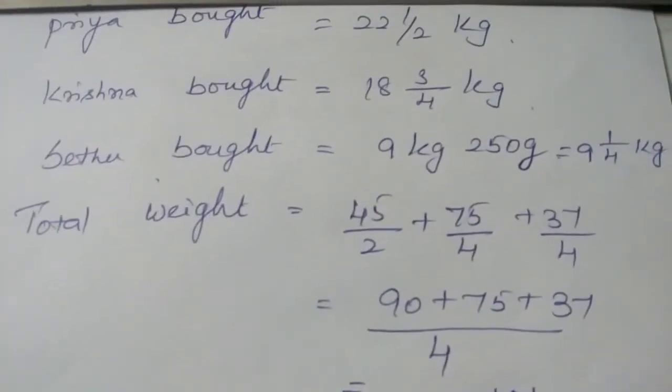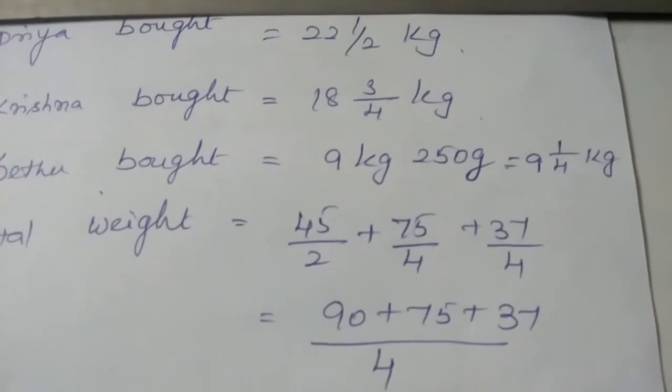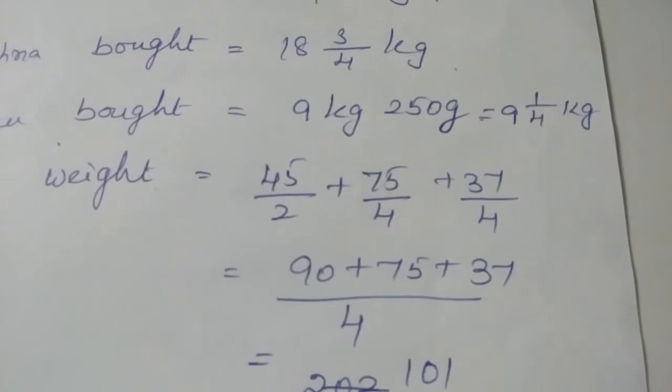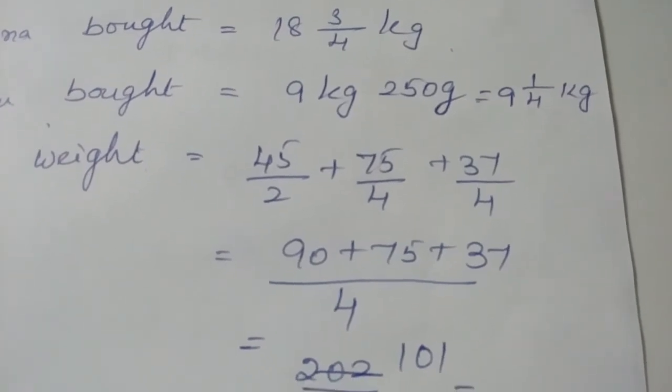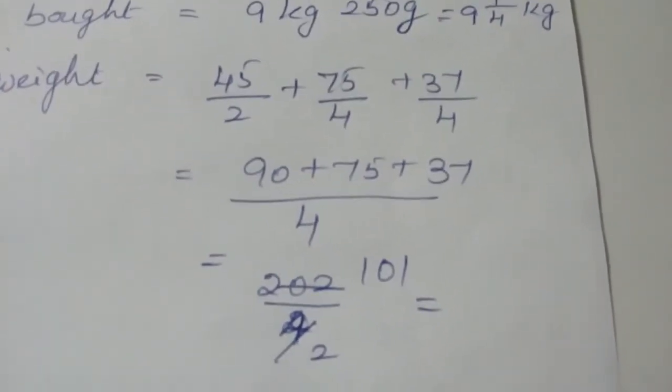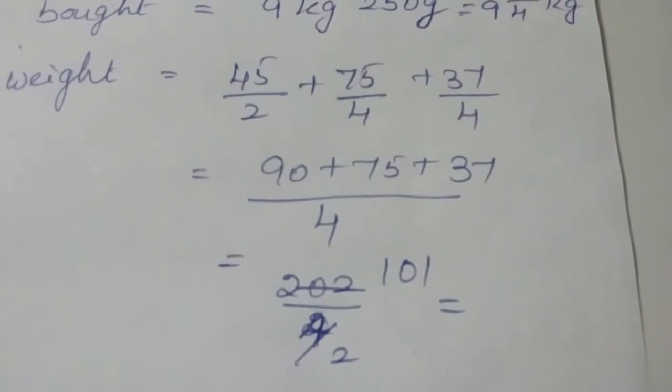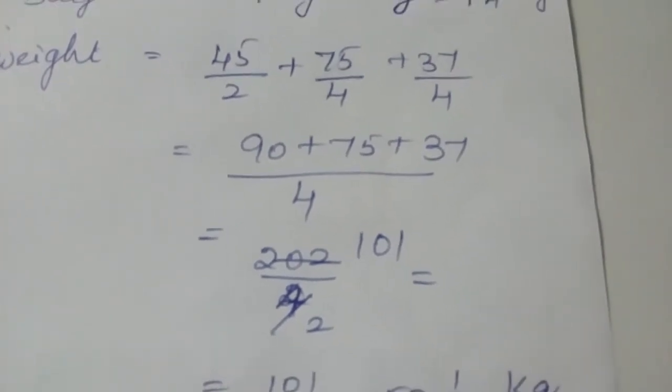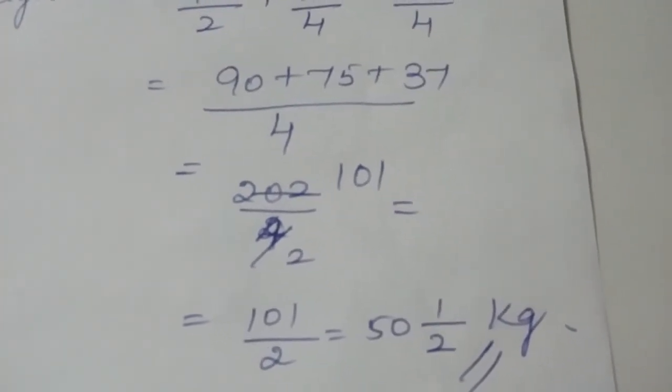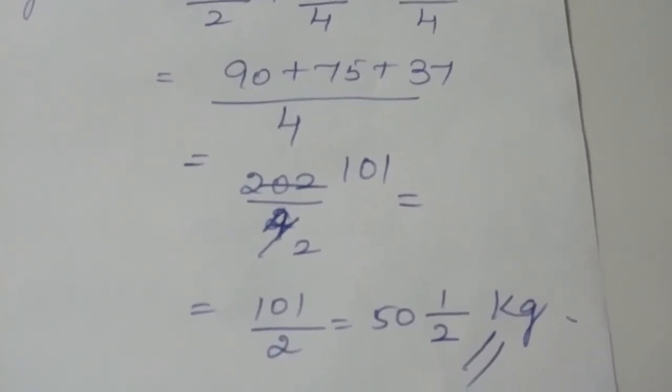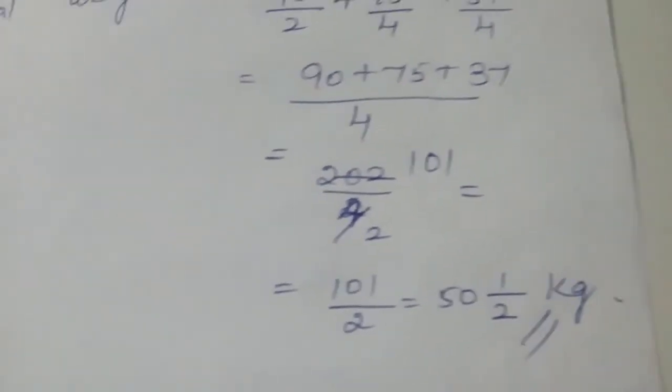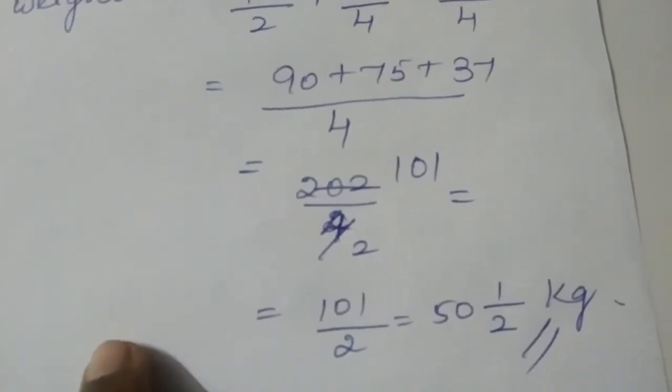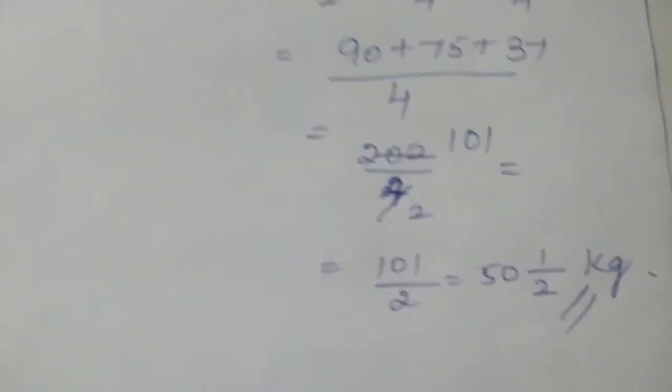Now I am going to find out what is the total weight. Taking the mixed fractions to be a fraction, so 45/2 plus 75/4 plus 37/4. We have to go for the LCM and then you are adding, it is coming 202/4. When cancelling by 2 on both the numerator and the denominator you are getting the value as 50 and a half kg. That means the total weight of the onion is nothing but 50 and a half kg. Here you should write the statement: the total weight of the onion is equal to 50 and a half kg.